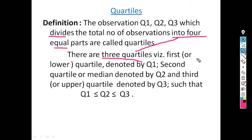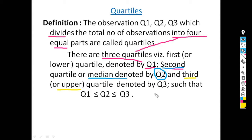The first quartile is known as the lower quartile and is denoted by Q1. The second quartile is also known as the median and is denoted by Q2 — this is an important MCQ point. The third quartile is also known as the upper quartile and is denoted by Q3. The relationship is Q1 ≤ Q2 ≤ Q3.